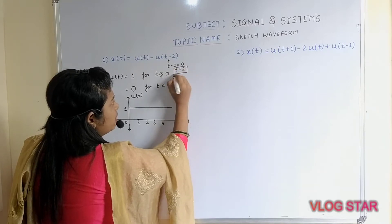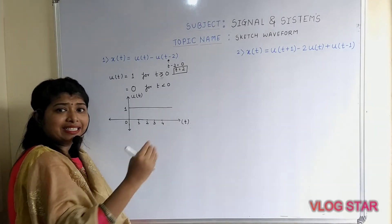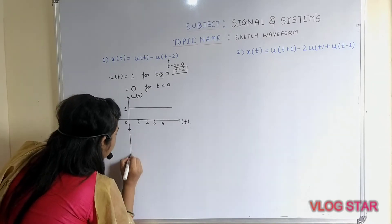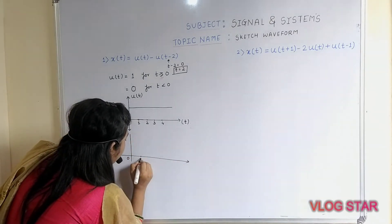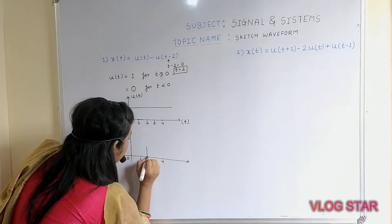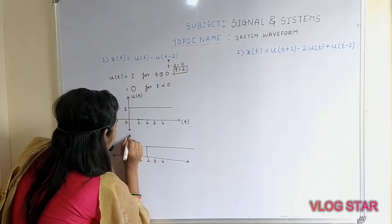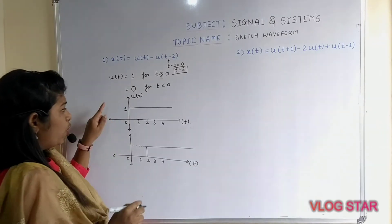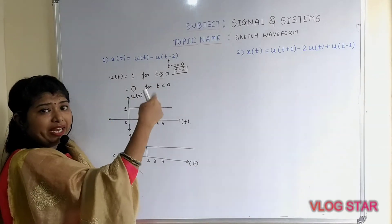So the value of t is equal to 2. This means you have to shift the u(t) signal to the right at t = 2. If you shift the signal to the right at t = 2, plot u(t − 2) starting from t = 2.